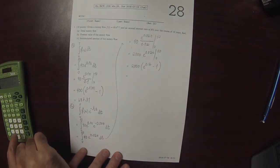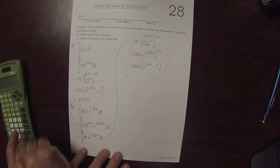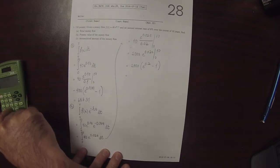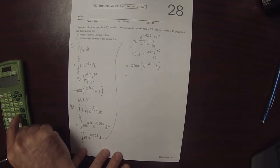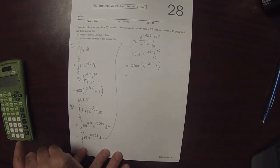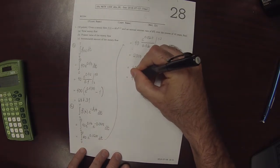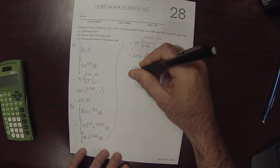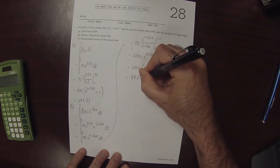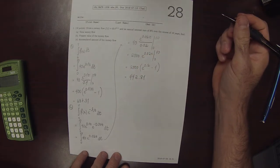Plugging that into the machine, 2,000 times exponential of 0.02 minus 1. So that is 442.81 rounded to the nearest cent.